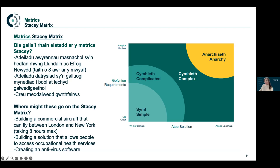The next example is slightly more complicated: building a solution that allows people to access occupational health services. If we worked within that sector, we would know what services were available to offer, and it's likely there is already a solution we could get some information about user needs or pain points from. However, there is a level of complexity and complication because there are so many users with different requirements and needs, and these needs might be affected by a variety of factors. Therefore we don't necessarily have a clear solution or one that fits everyone, and we need to know more about user needs before deciding on the relevant solution. With this in mind, this would sit more within the complicated and complex area.